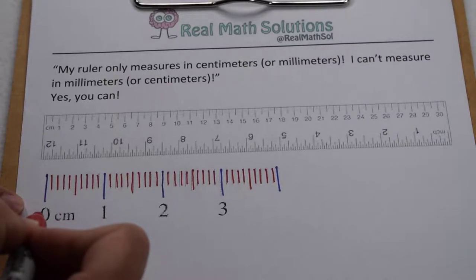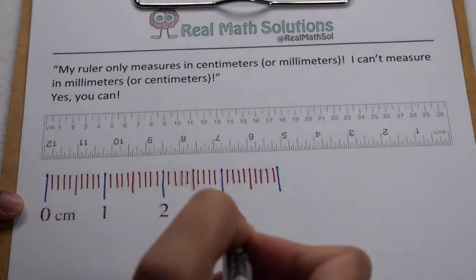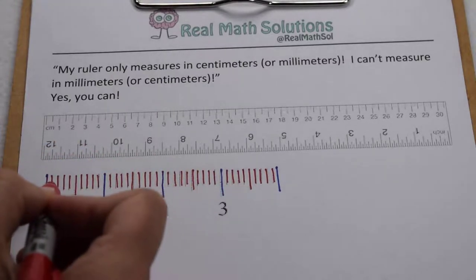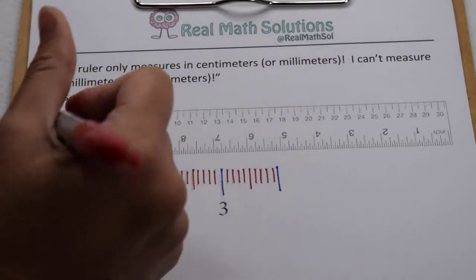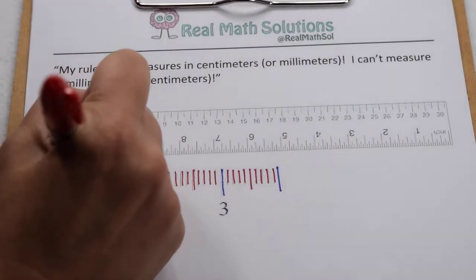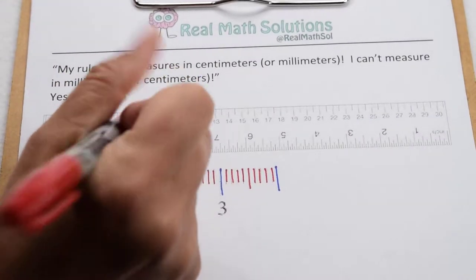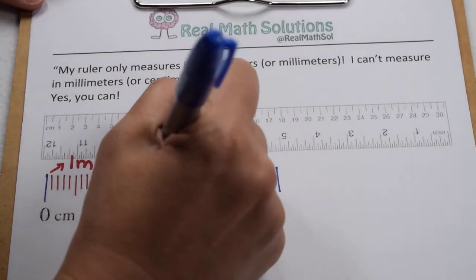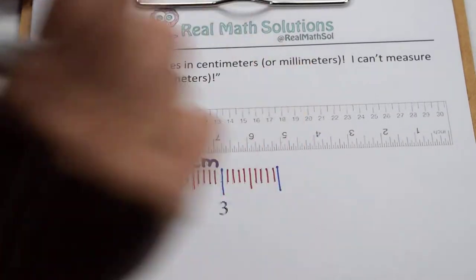Here we start at zero centimeters. The ones that are marked with the large numbers are my centimeters, and the small ones in between are my millimeters. So this one little red mark here represents one millimeter, and then these blue marks here represent one centimeter.